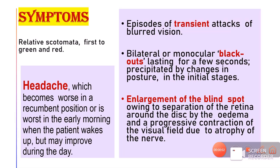In the beginning stages, symptoms are very vague and vision is normal for quite a long time. This particularly applies to central vision, which is mostly unaffected. Later, patients can develop transient attacks of blurred vision, described as bilateral or monocular blackouts lasting very few seconds, precipitated by changes in posture. Patients often report these blackouts occurring in the morning upon waking.